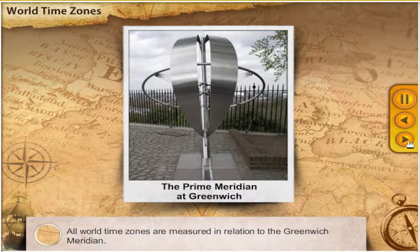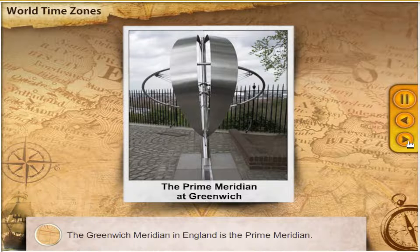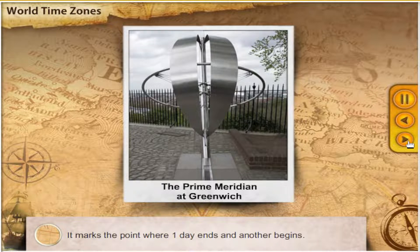All world time zones are measured in relation to the Greenwich Meridian. The Greenwich Meridian in England is the Prime Meridian. It marks the point where one day ends and another begins.